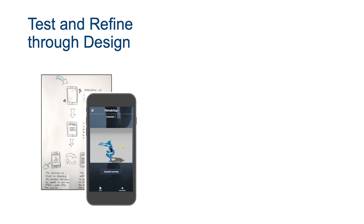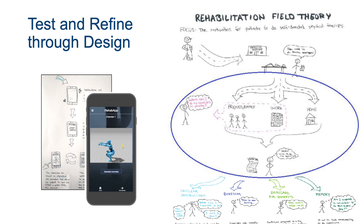On the right we see how trialing this prototype shed light on the different exercise contexts, as highlighted in a blue circle. Participants commented that they would use it at home, potentially also at work, but only if they had a private space.